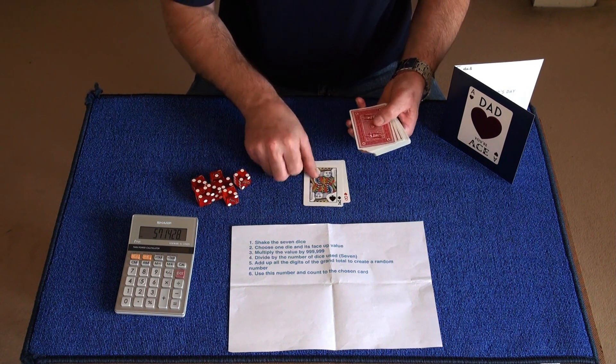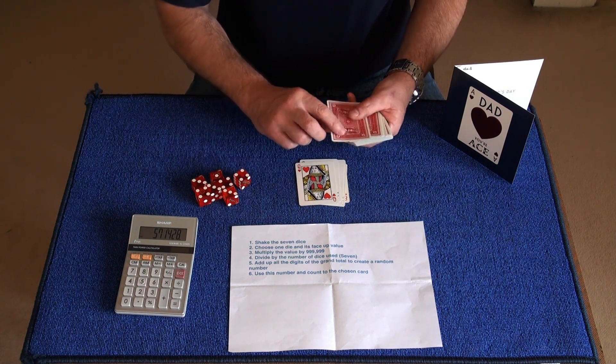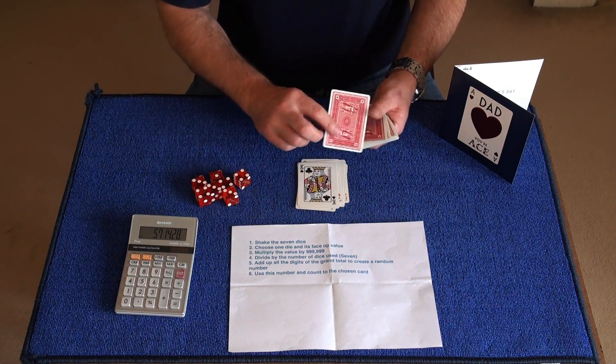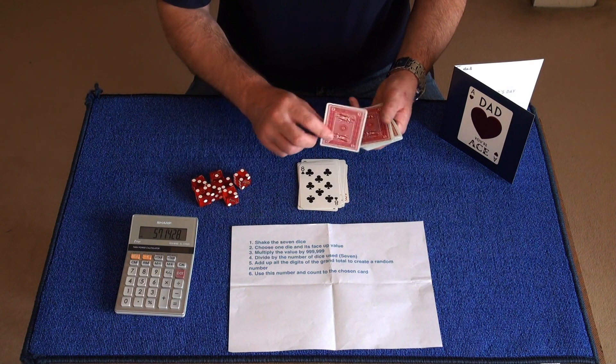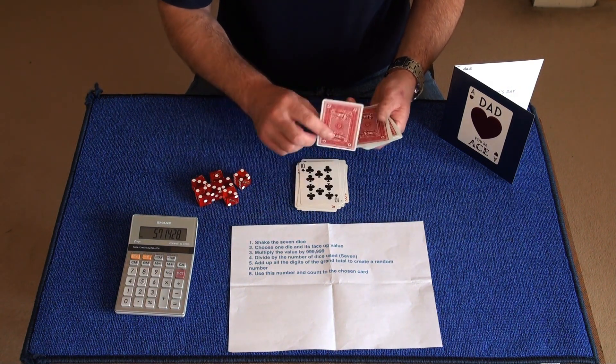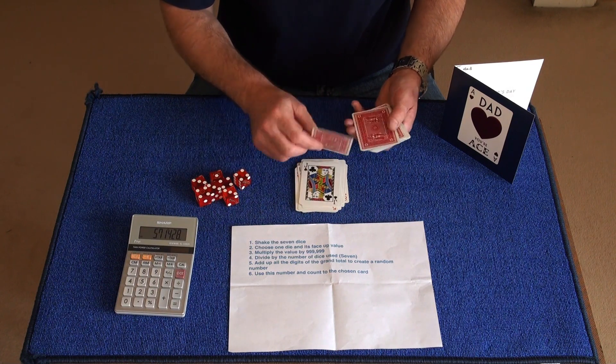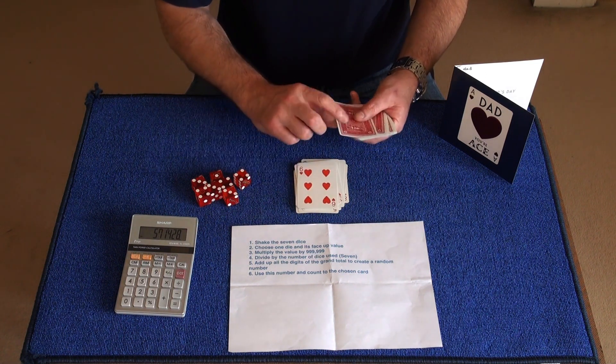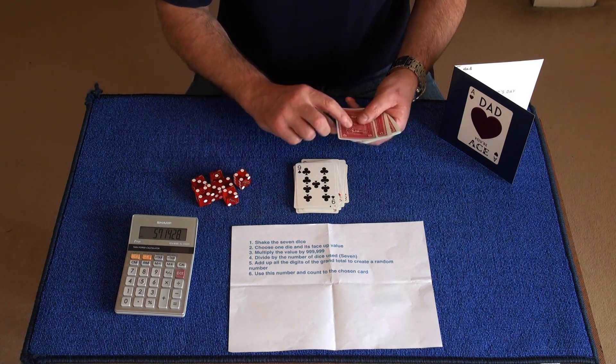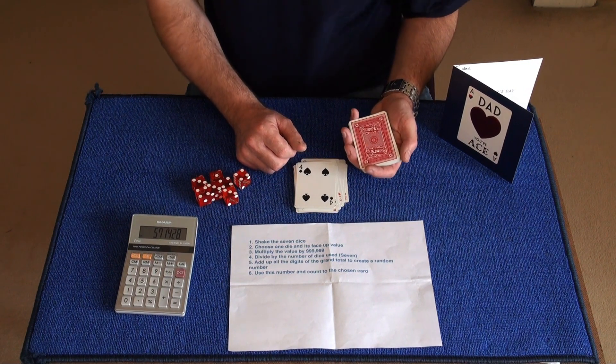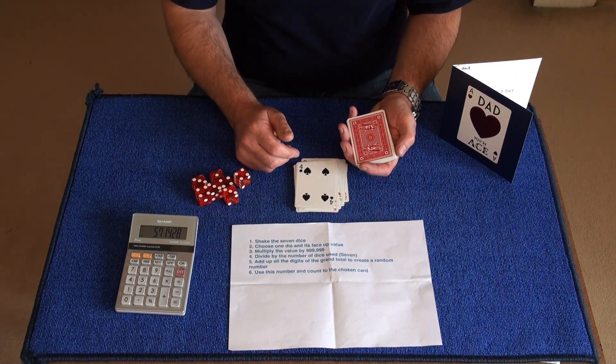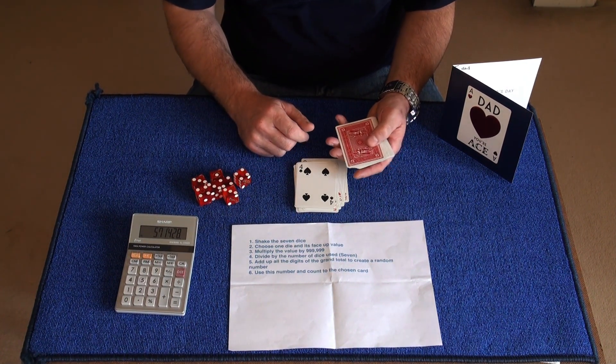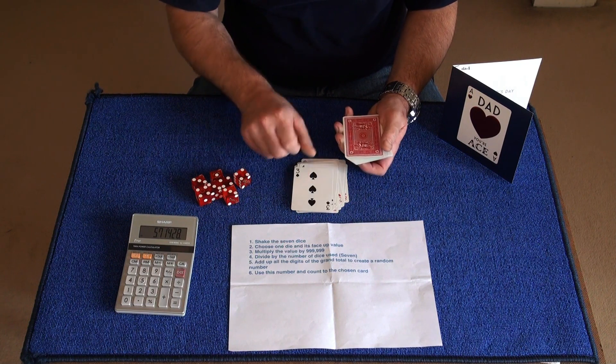Counting one through 26. Now what was your chosen card? Three of spades. Now wouldn't it be amazing if your three of spades is in the 27th position. Let's have a look. And that is the three of spades.